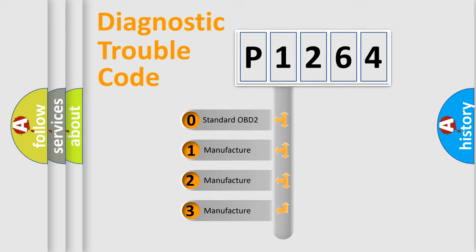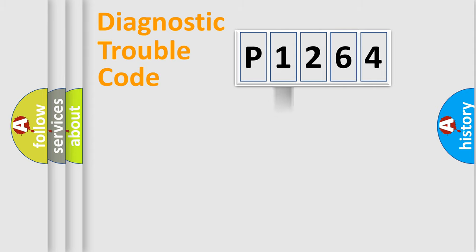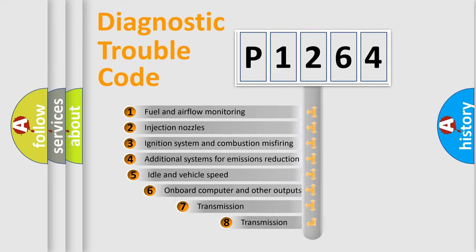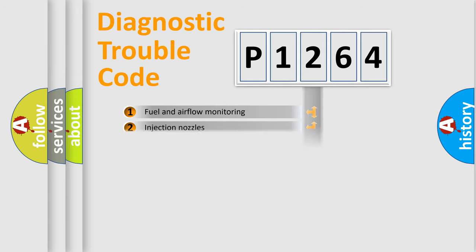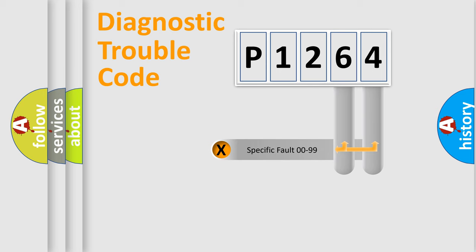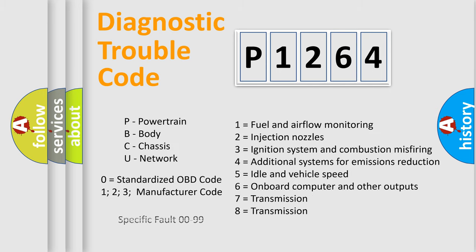If the second character is expressed as zero, it is a standardized error. In the case of numbers 1, 2, or 3, it is a manufacturer-specific expression of the car error. The third character specifies a subset of errors. The distribution shown is valid only for the standardized DTC code. Only the last two characters define the specific fault of the group. Let's not forget that such a division is valid only if the second character code is expressed by the number zero.